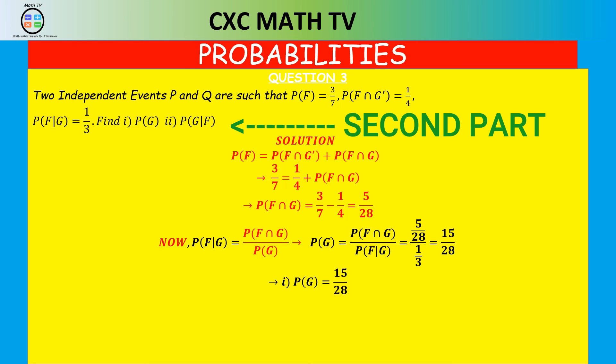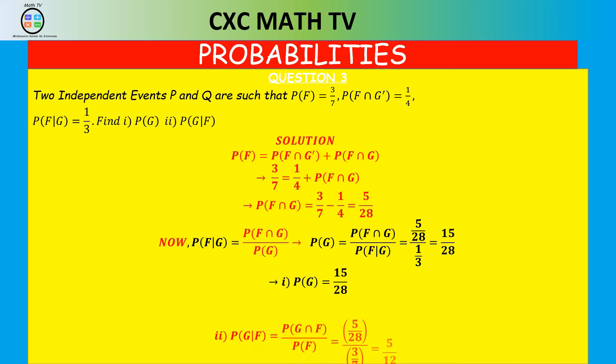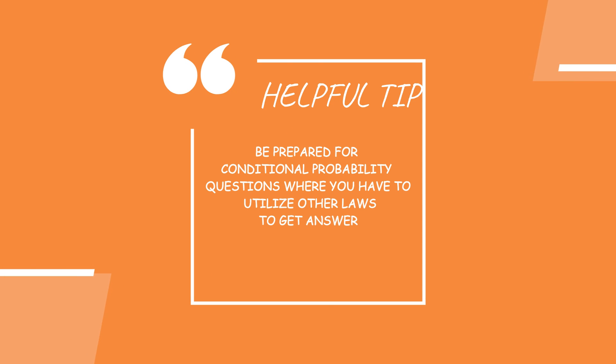Part two: find P(G|F). That is P(G∩F) / P(F) = (5/28) ÷ (3/7) = five over 12. So that is how we do this question. Notice we had to remember the laws of probability — the complement law, the union law, the intersect law, De Morgan's law — combined with the conditional probability formula in order to arrive at the answer.